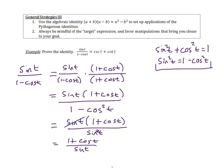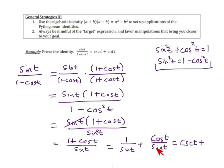Now there are two terms in the numerator and one denominator, so we split the fraction: one over sine t plus cosine t over sine t. One over sine t is cosecant t, and cosine over sine is cotangent t. So we have cosecant t plus cotangent t — the left side of our identity has become the right side.